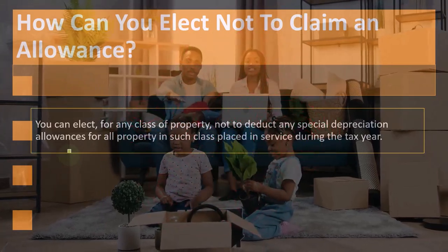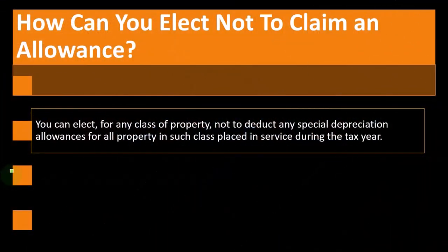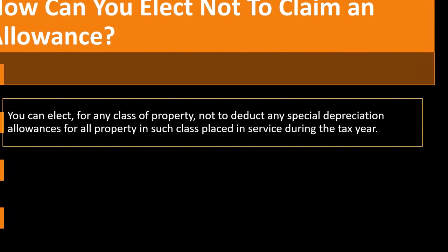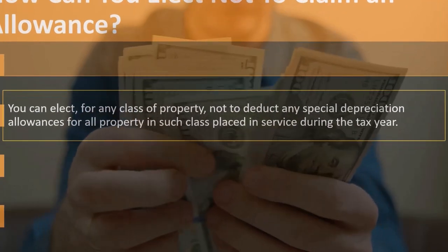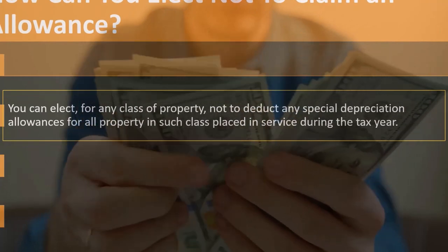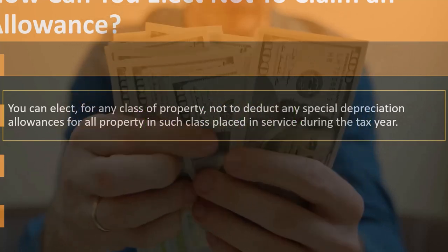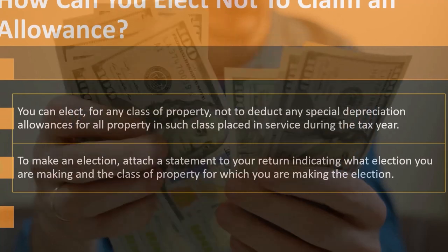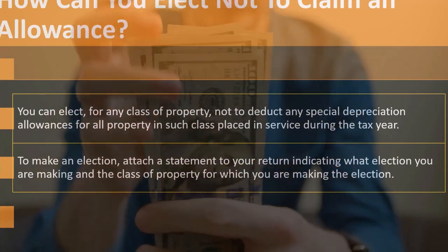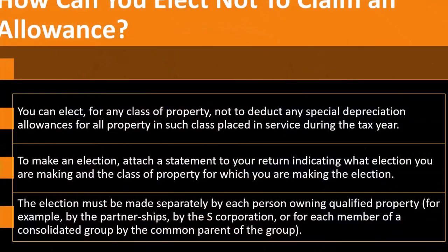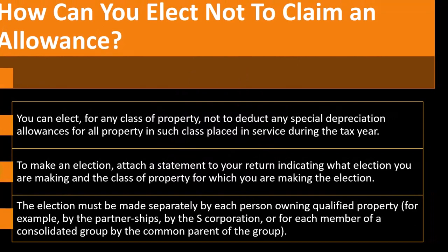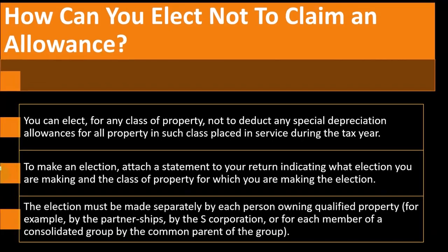You can elect not to claim the special depreciation allowance. For any class of property, you can elect not to deduct any special depreciation allowance for all property in that class placed in service during the tax year. You might do this if your taxes are lower this year due to lower income and a lower tax bracket, and you expect higher income in future years where the deduction would be more valuable. To make the election, attach a statement to your return indicating what election you are making and the class of property. Tax software helps with this process. The election must be made separately by each person owning qualified property — for example, by the partnership, the S corporation, or for each member of a consolidated group by the common parent.